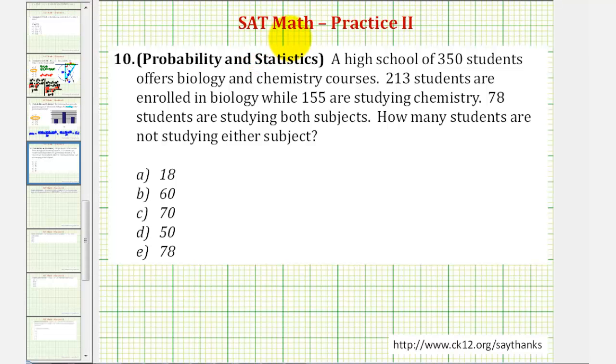Welcome to a practice SAT math question. A high school of 350 students offers biology and chemistry courses. 213 students are enrolled in biology while 155 students are studying chemistry. 78 students are studying both subjects. How many students are not studying either subject?